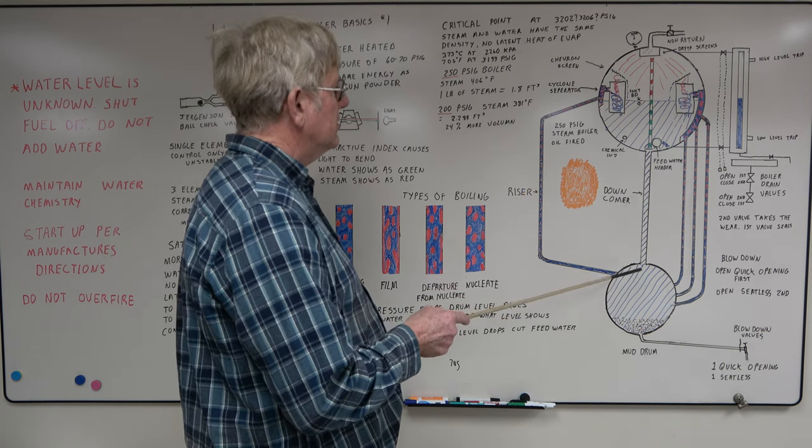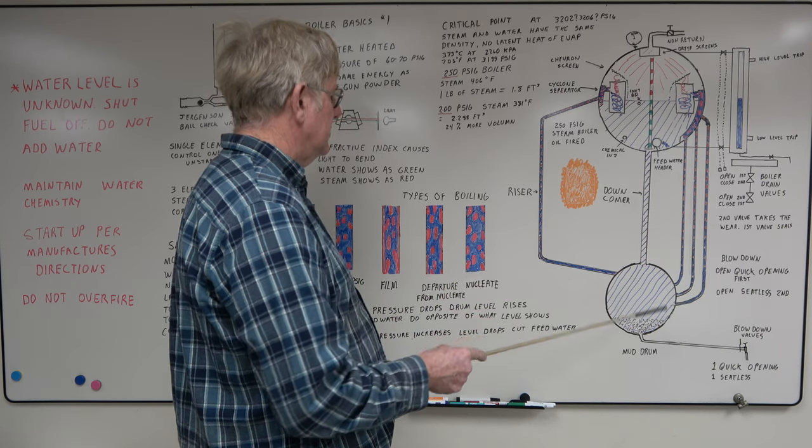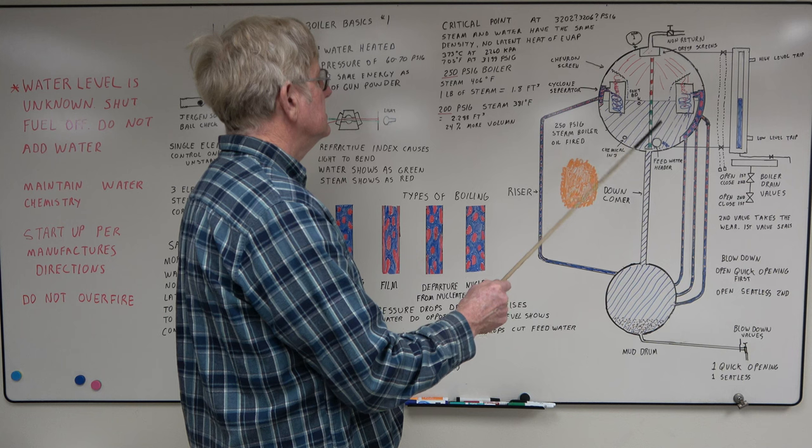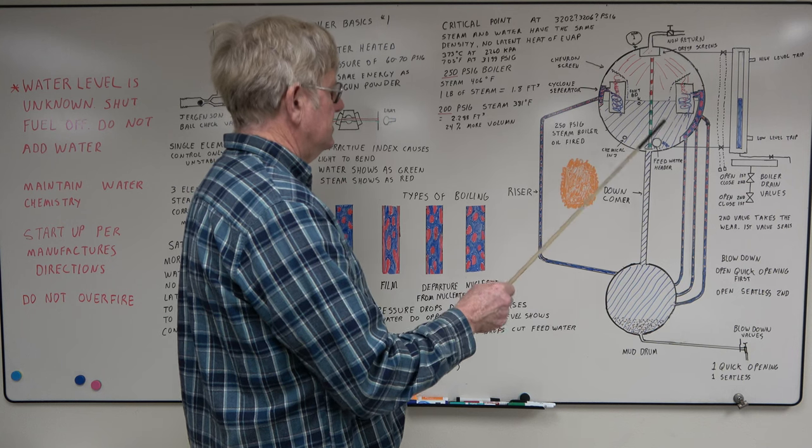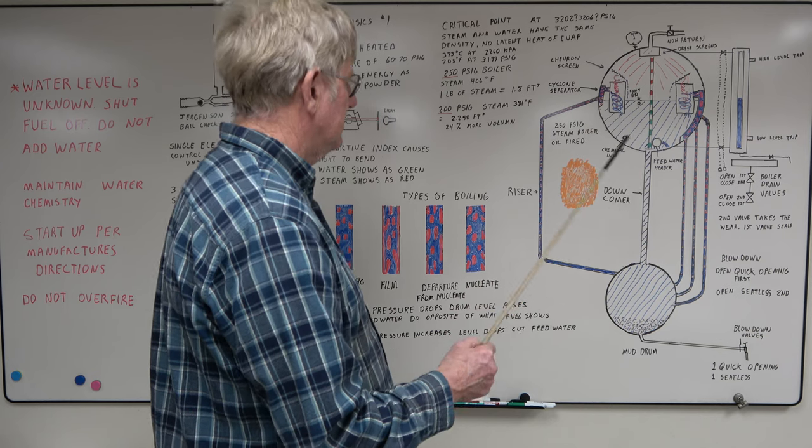We have a two-drum boiler, kind of a cartoonish drawing. We have the steam drum, downcomers, mud drum, risers, and it's just a basic circulation. There's no superheater, no economizers on this drawing.